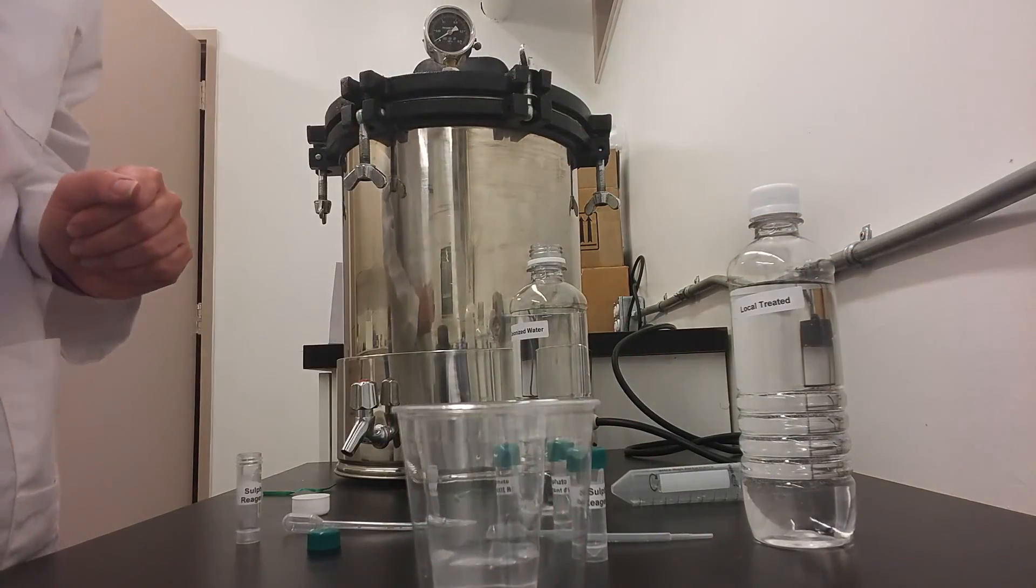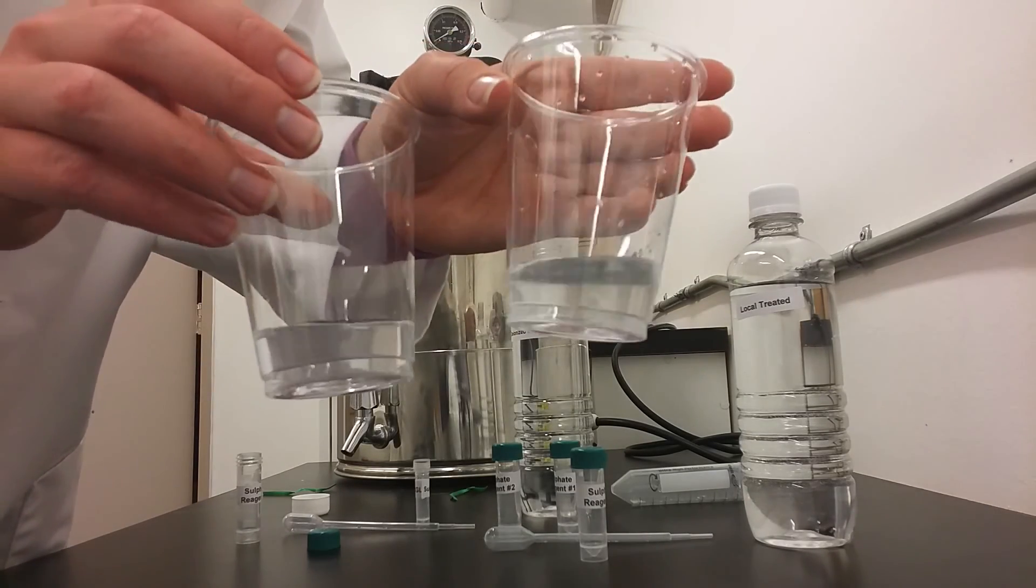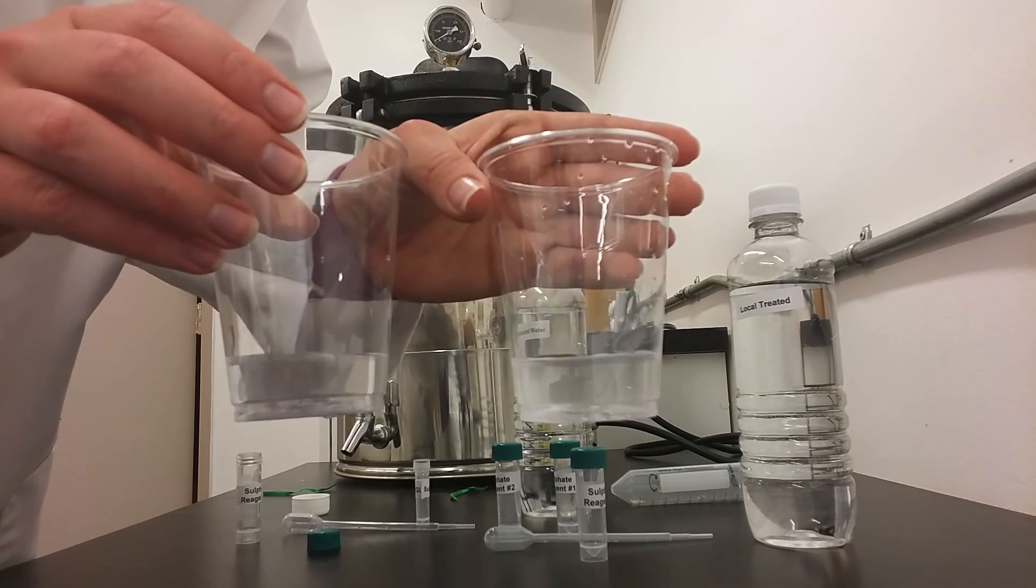Now, in order to perform the test, you will compare the cloudiness of different cups to each other to determine the levels of sulfate present in the water.